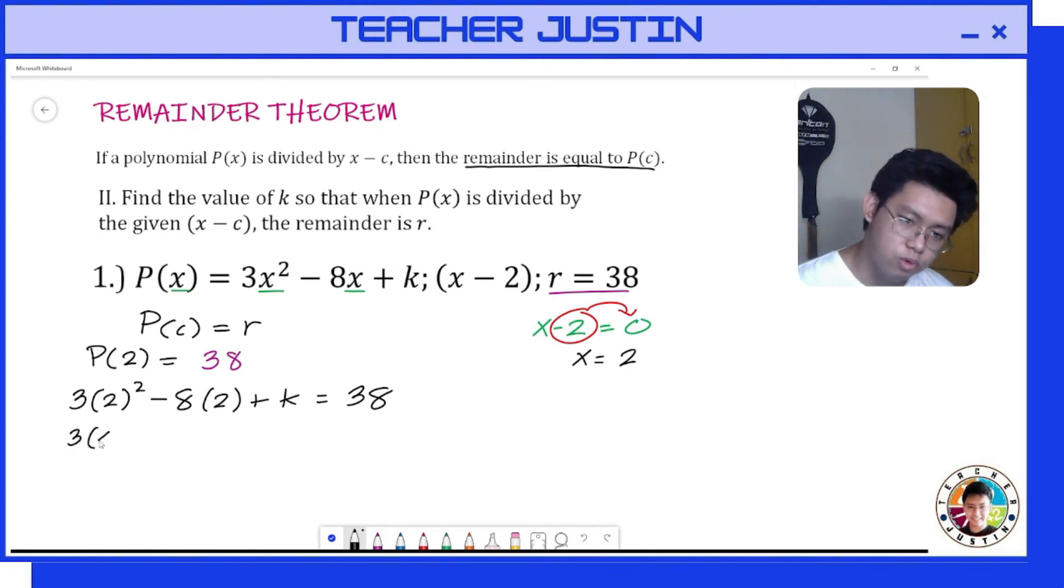Giving us 3 times 4 minus 8 times 2 plus k equals 38. Then 3 times 4 is 12, minus 8 times 2 is 16, plus k equals 38. Next, 12 minus 16 is -4, so we will have -4 + k = 38.